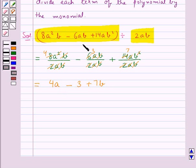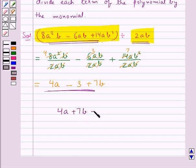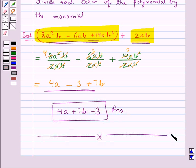So when we divide this polynomial with the given monomial we get this. That is, our final answer is 4a + 7b - 3. This completes the session. Hope you have understood the solution for this question.